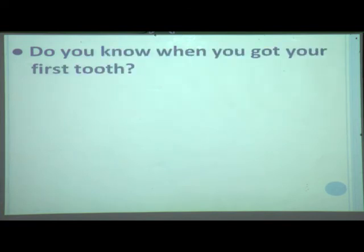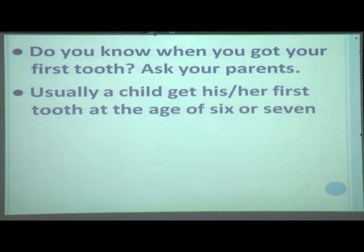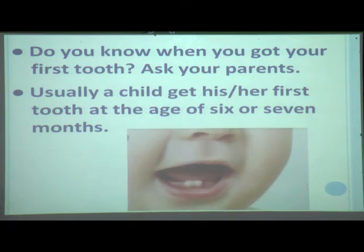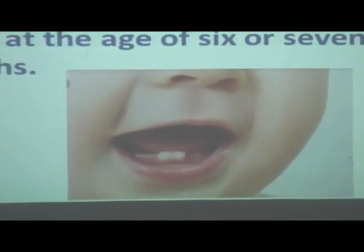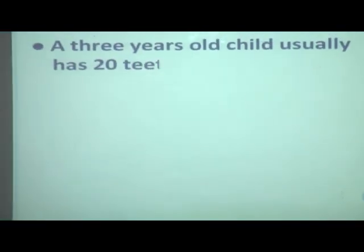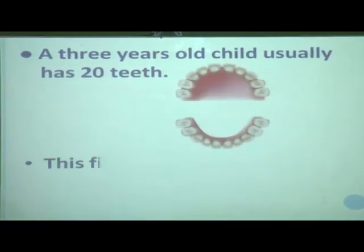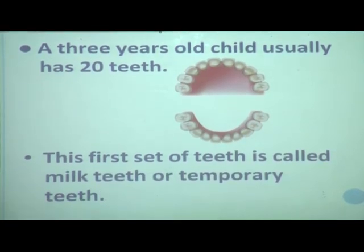Now, do you know when you got your first tooth? Ask your parents. Usually a child gets his or her first tooth at the age of 6 or 7 months. You can see a baby picture here — when a baby is 6 or 7 months old, he gets his first tooth. A 3-year-old child usually has 20 teeth.